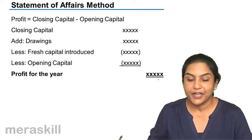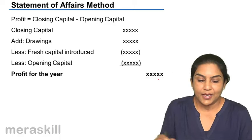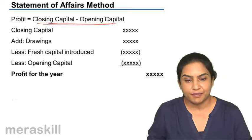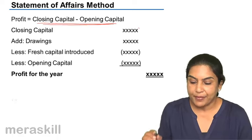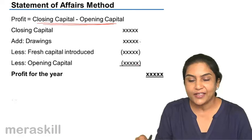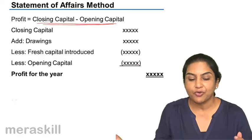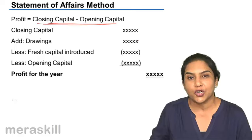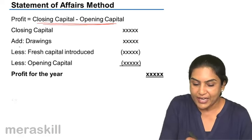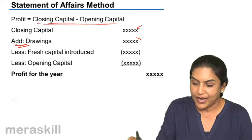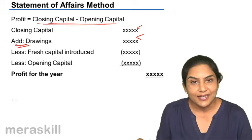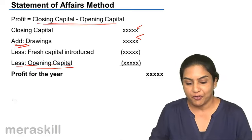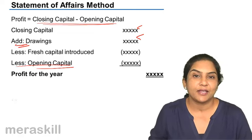How is profit determined under the statement of affairs method? Profit is equal to closing capital minus opening capital. If you take closing capital less opening capital, but add back the drawings which have been withdrawn from the business — because those withdrawals were nothing but profit — had that money not been withdrawn, it too would have been part of the profits. Therefore, add back the drawings. If capital has increased because fresh capital was introduced, that is not part of profit, so reduce that amount to arrive at the profit.